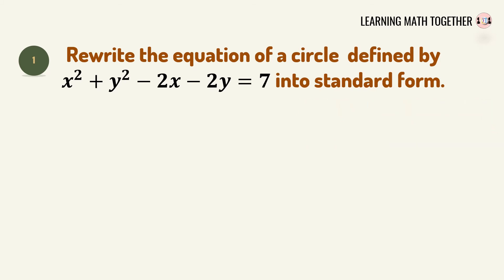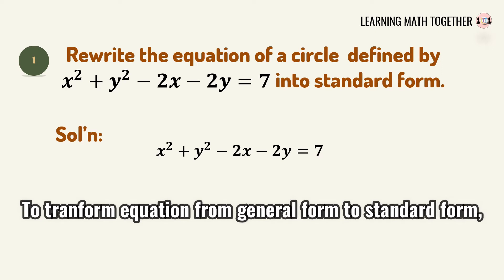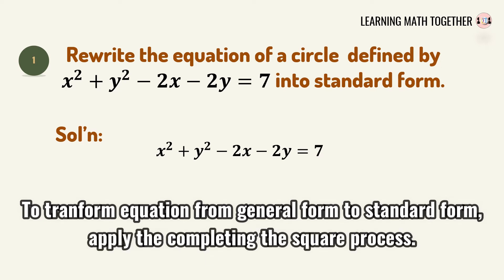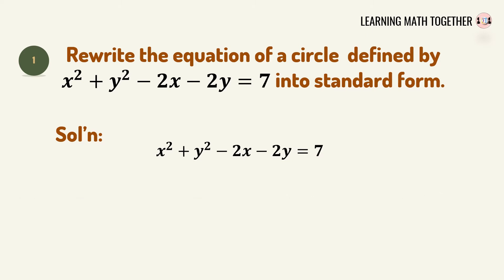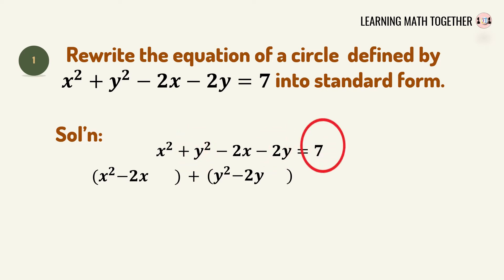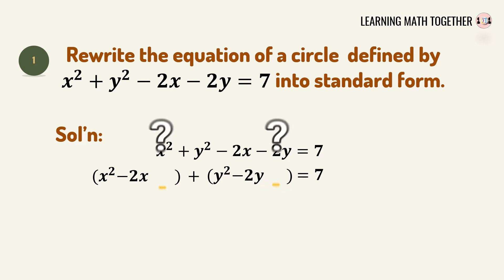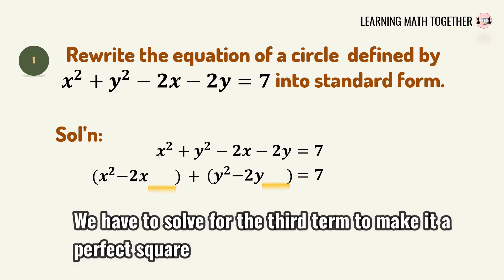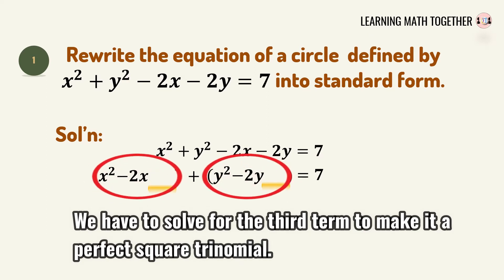Let's begin solving. The first step is to copy the general equation. In order to transform this equation into standard form we have to do completing the square. The second step is to separate all the terms with variable x, put a plus sign, and separate the terms with variable y. All constant terms will be placed on the right side of the equation. We put spaces because we will solve for the third term that will make each a perfect square trinomial.